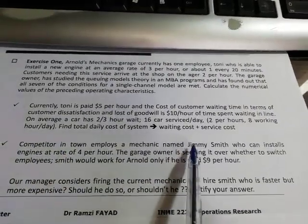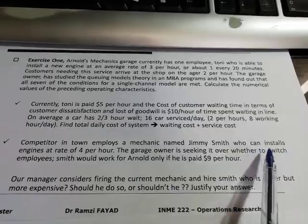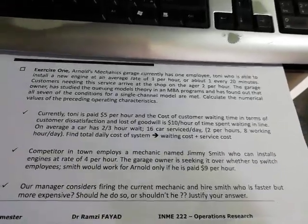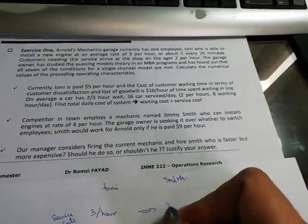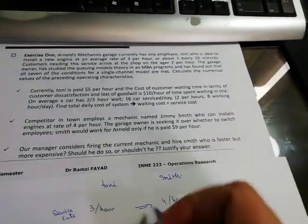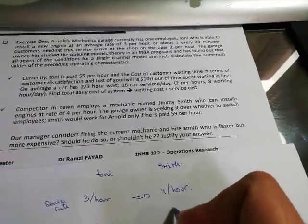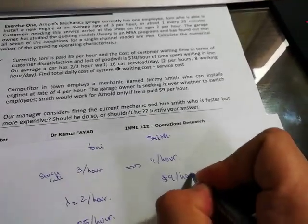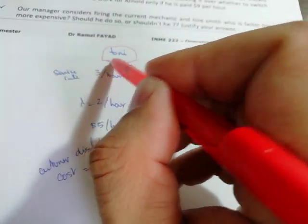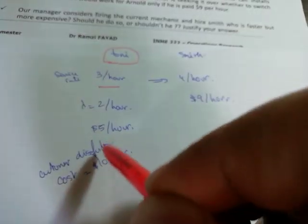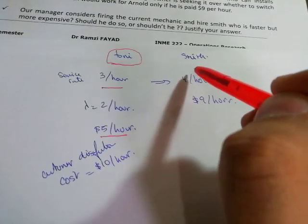There is someone called Jimmy Smith who can install engines at a rate of four per hour. So we have Smith who can install four per hour, which is faster, but he charges us nine dollars per hour.